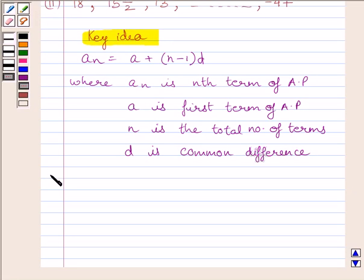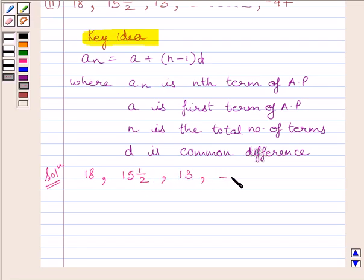Now let us start with the solution. The AP given in the question is 18, 15 and a half, 13, till minus 47. Let us assume that the total number of terms in the given AP is n.